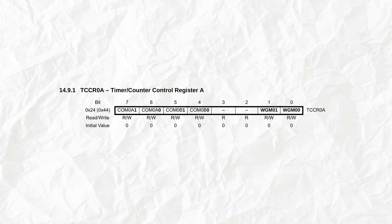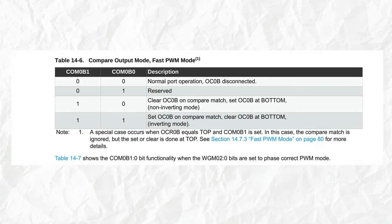Next we have to set the compare output mode. And there's two bits in the TCCR0A register for doing this. In the table for fast PWM mode, we can see that we have four options. And I'm going to choose the third. So one zero to have the not inverting mode.